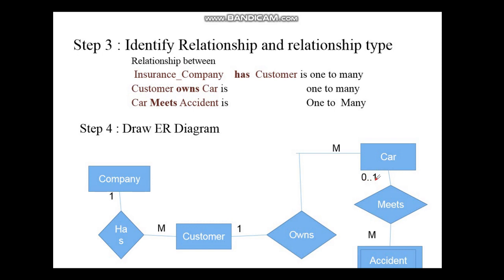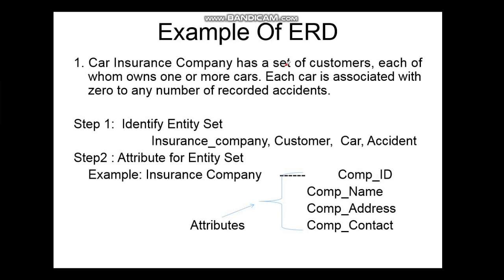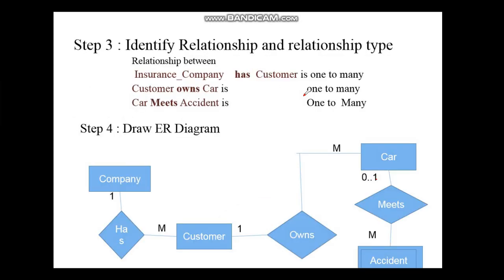As the question mentions each car is associated with zero to any number of recorded accidents, this means zero or one car meets with many accidents — it can be zero, one, two, or three accidents. So we write this as zero-to-one car meets many accidents. Summary: one company has many customers, one customer owns many cars, zero or one car meets many accidents.